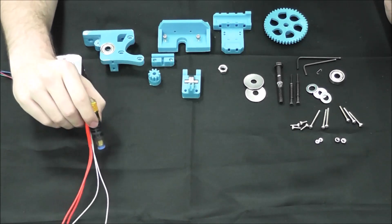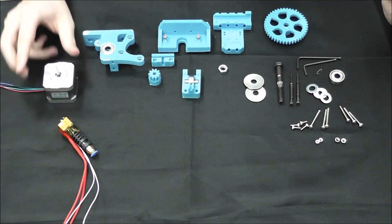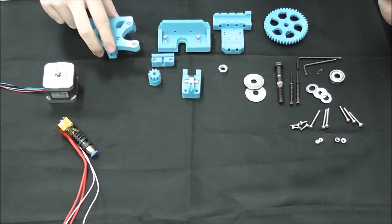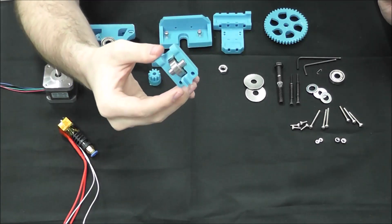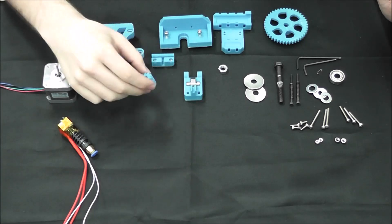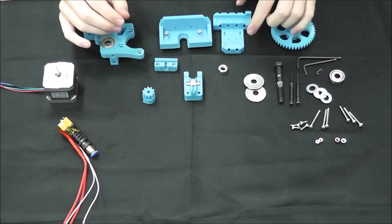We have our assembled J hotend, our NEMA 17 extruder stepper motor, the extruder body, the extruder adapter, the extruder idler, the small gear, the large gear, the X belt holder, and the X carriage.